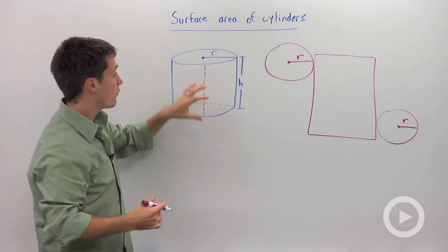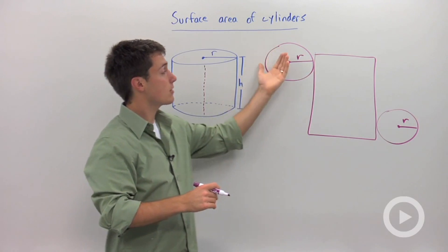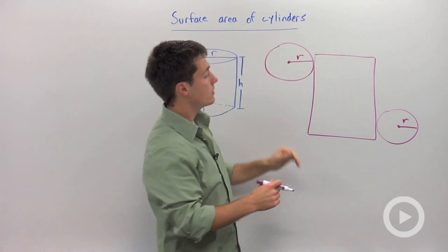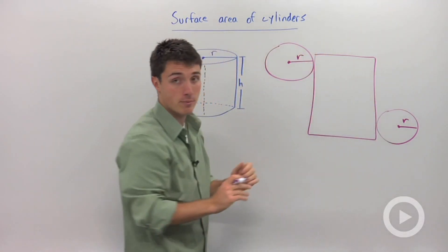So the net for a cylinder is going to look something like this. We're going to have a circle on top which you could fold over, you're going to wrap this part around, and then you're going to fold the other base.